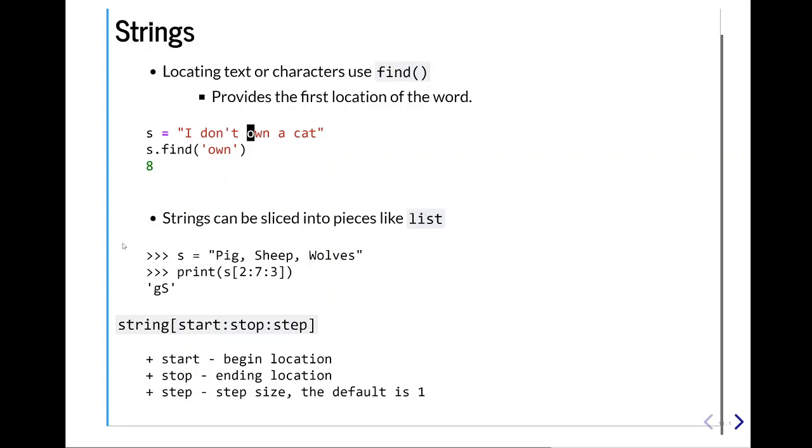Strings can be sliced like lists, and it follows the same syntax. So, we just take our string, and then we do start, colon, stop, colon, step. Where start is our beginning location, stop is our ending location, and the step size is the number of steps we want to go, and the default is 1.